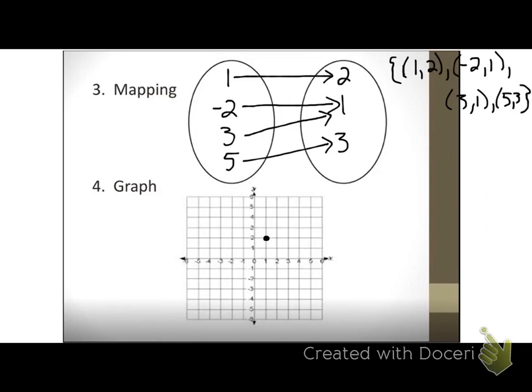For (-2, 1): we always start at our origin, 0, 0. It's negative 2, so I'm going left 2. Positive 1, so I'm going up 1 — that's where I'll place my point. For (3, 1): right 3, up 1 — that's where my third ordered pair would be placed.